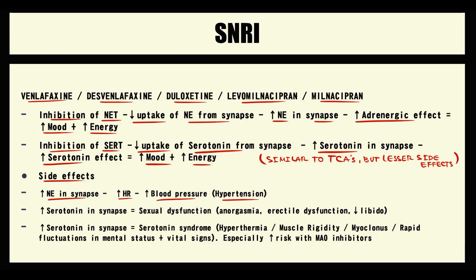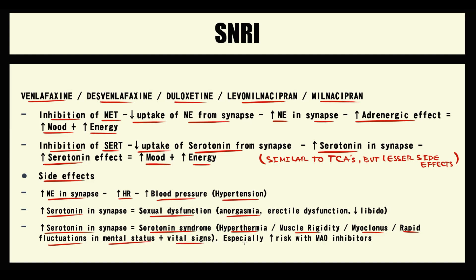SNRIs cause an increasing amount of serotonin in the synapse, which greatly increases the risk of sexual dysfunction — usually anorgasmia, which is the inability to have a proper orgasm. With increasing serotonin in the synapse, the risk of serotonin syndrome also increases. Serotonin syndrome manifests with hyperthermia, muscle rigidity, myoclonus, and rapid fluctuations in mental status and vital signs. Prescription of SNRIs with MAO inhibitors greatly increases the risk of serotonin syndrome.